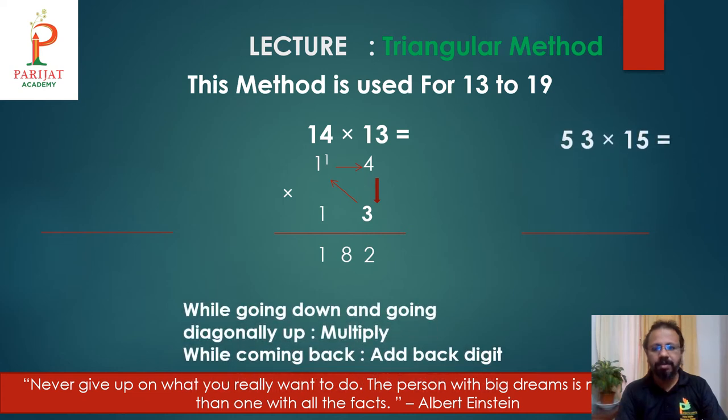Again, 3 times 5 is 15 carry over 1. Then 5 times 5 is 25 plus 1. 26 plus back digit, 3. 26 plus 3 is 29. We will take carry over 2 in 5. And 5 plus 2 becomes 7. Our answer is 795.